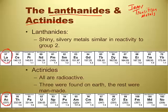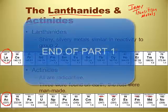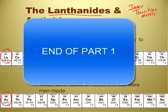The name Einsteinium explains itself — somebody made it and named it after Einstein. Californium was made at the University of California, Berkeley. You can also spot Curium, named after Curie, Fermium, Mendelevium — named after Mendeleev — and Nobelium, named after Nobel, who gave out prizes.